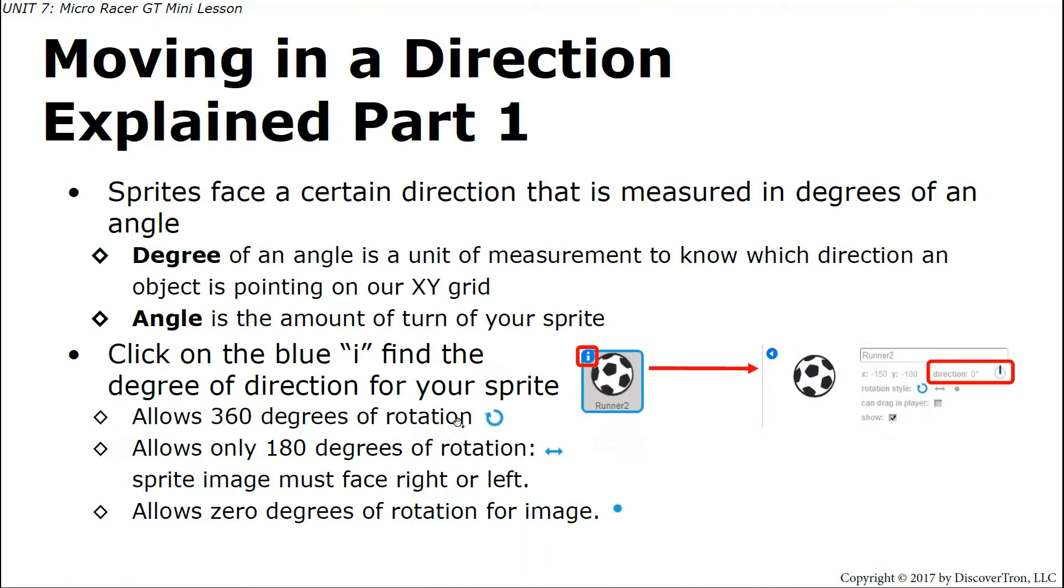Make sure you know the difference between 360 degrees of rotation and 180 degrees and then zero degrees. The key term right here is that these are for the image. You may have this one selected where it allows zero degrees of rotation. The image won't change its direction. However, the sprite can still change which direction it's facing. Even though it's pointing a different direction than the actual image is facing and the image can't turn, the direction that it can move can still turn.